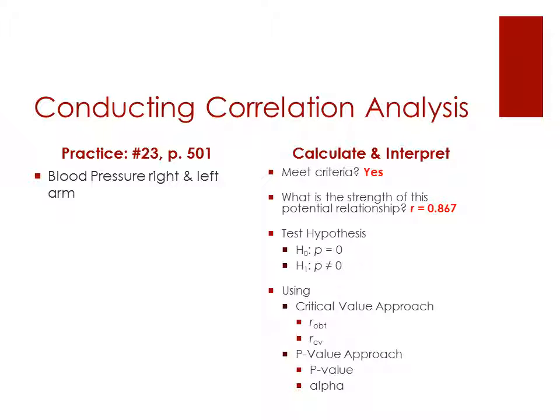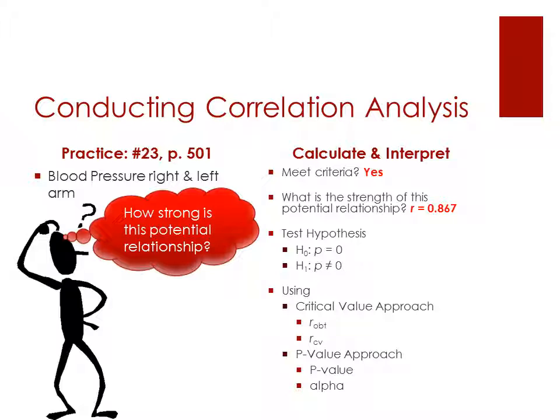Okay, you should have got an R of 0.867. So how strong is this potential relationship going to be? Is this a non-existent, weak, moderate, or strong relationship? If you need to, pause the video and go back and check in your notes for those criteria that we went over earlier for this section.